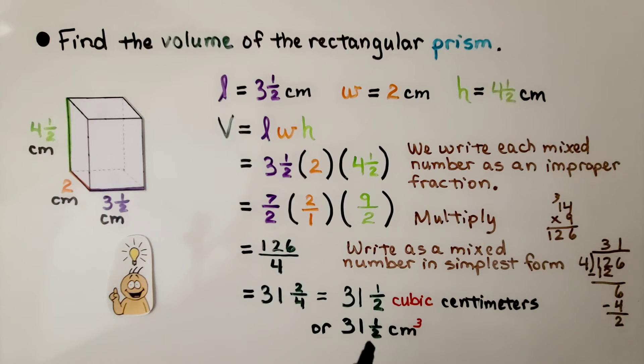We can simplify this to thirty-one and a half cubic centimeters. So we can also write it as centimeters cubed, with the little three exponent, can't we?